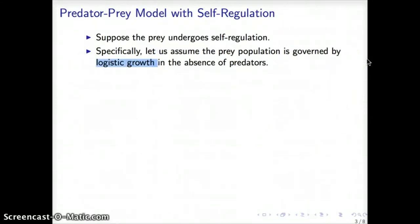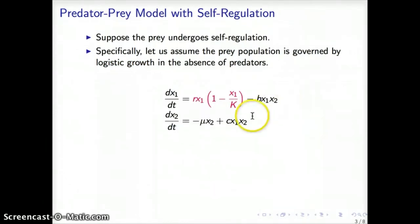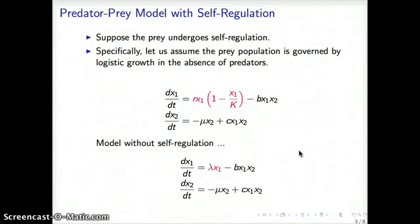So we now assume that the population of prey is subject to logistic growth in the absence of predators. Therefore, the equations look in this way. You may compare that to the original formulation in which the growth term for the population of prey was simply linear.